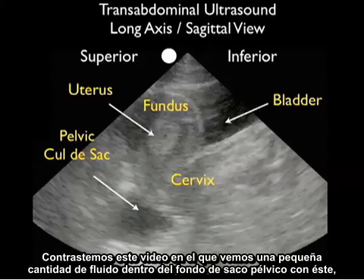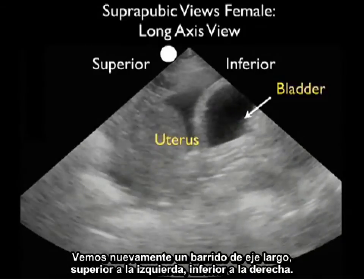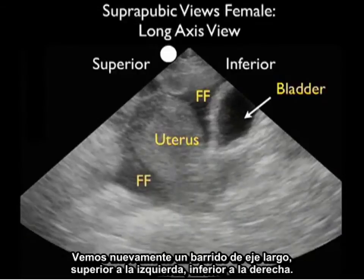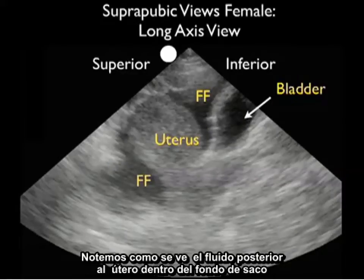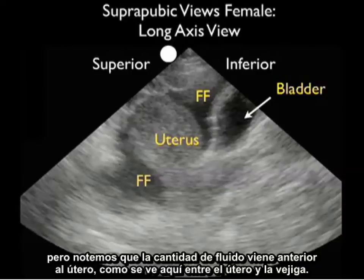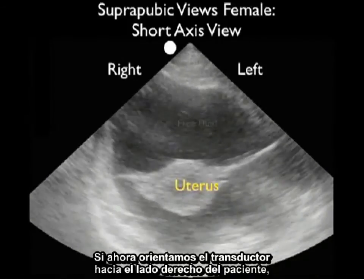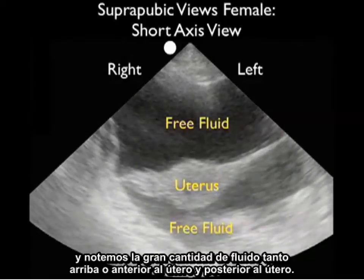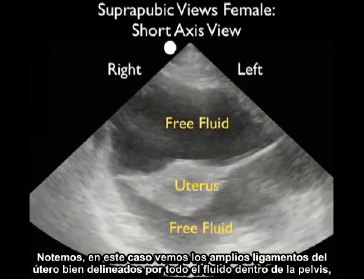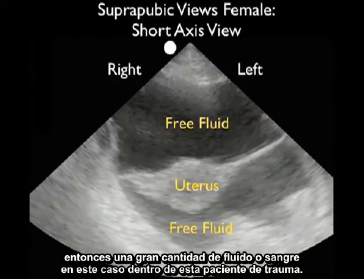Let's contrast that clip showing a small amount of fresh fluid within the pelvic cul-de-sac with this one, in which we have a female trauma patient with a large amount of bleeding within the pelvic cavity. We see again a long axis scan, superior to the left, inferior to the right. The bladder is the dark structure inferiorly, and the uterus is superior to the bladder. Notice the fresh fluid posterior to the uterus within the cul-de-sac, but note that the amount of fluid also comes anterior to the uterus, between the uterus and the bladder — denoting a large amount of blood. Orienting the probe towards the patient's right side, we obtain a short axis view of the same patient, showing the uterus in the middle with a large amount of fresh fluid both anterior and posterior to it. We can also see the broad ligaments of the uterus well outlined by all the fresh fluid within the pelvis.